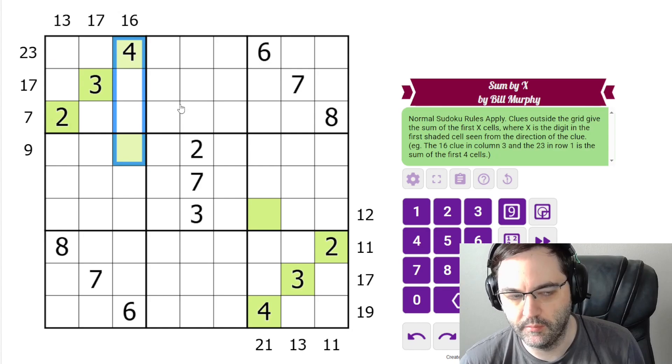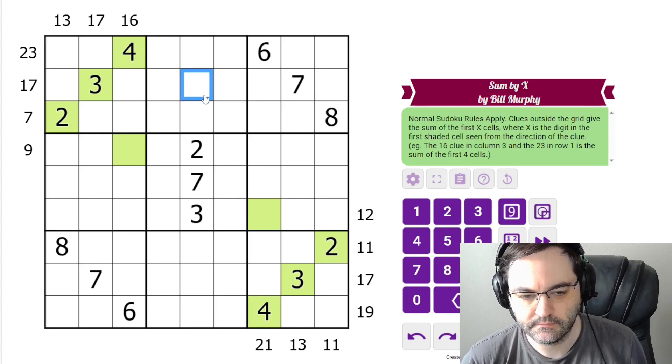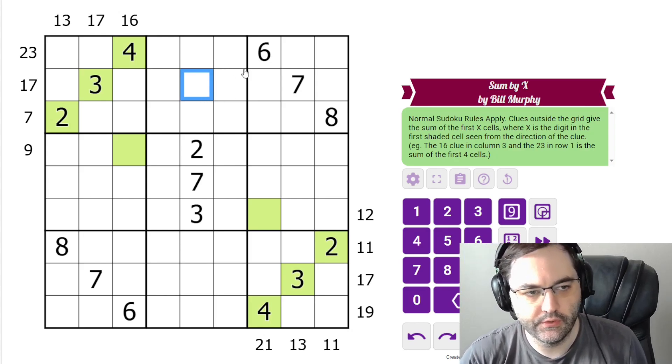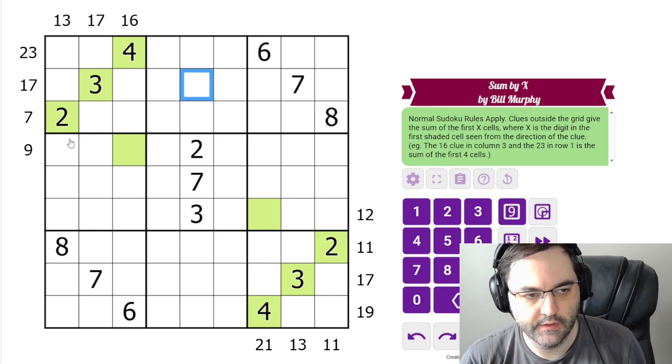The 16 clue, we're summing these 4 cells. The 17, we're summing these 3 cells. And so on. So those are the rules. Let's get started.